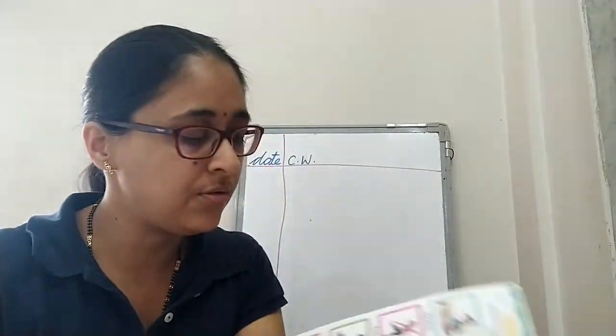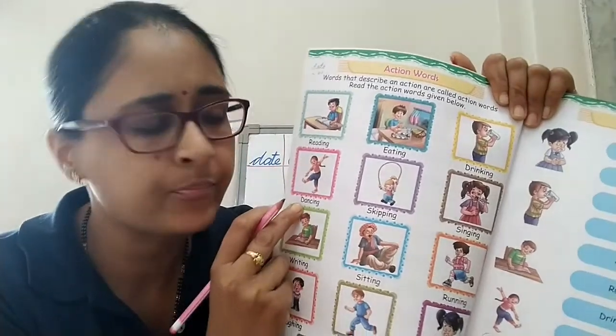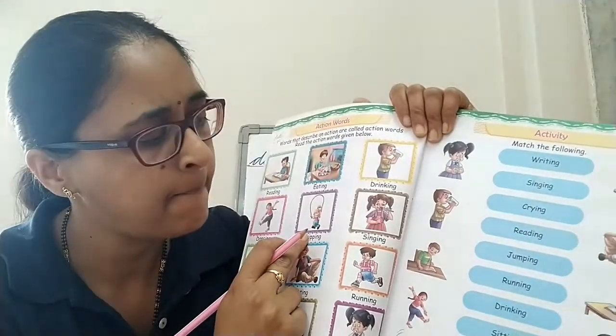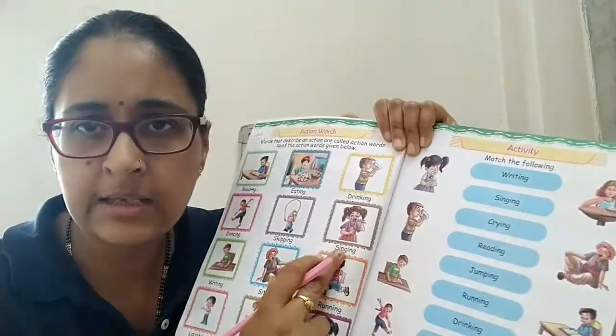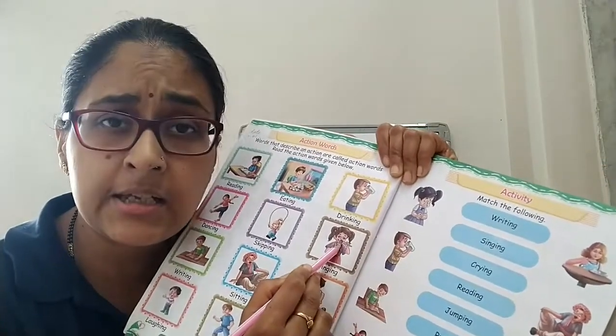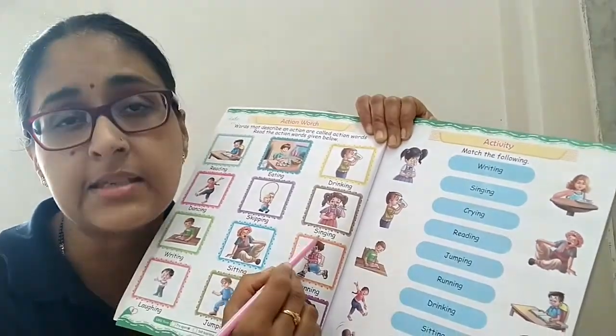Next है eating. वो खा रहा है, तो वो एक काम है — एक action है, इसलिए eating. फिर उसके बाजू में drinking. Dancing. Skipping. यह क्या कर रही है? गाना गा रही है, तो क्या कर रही है? Singing.